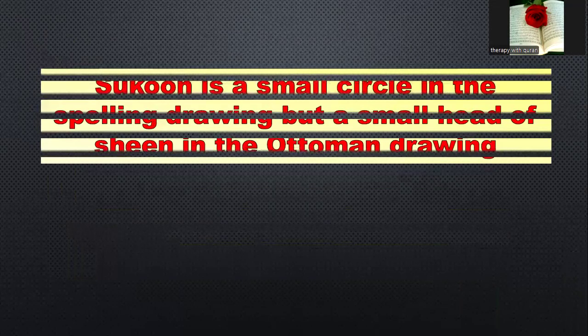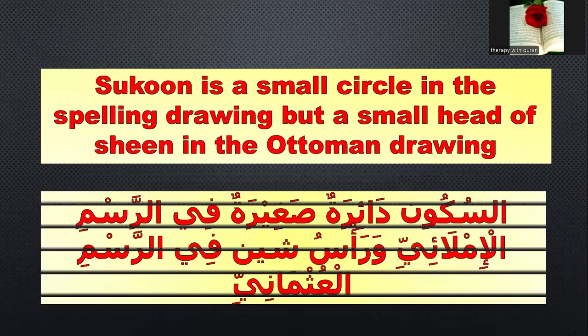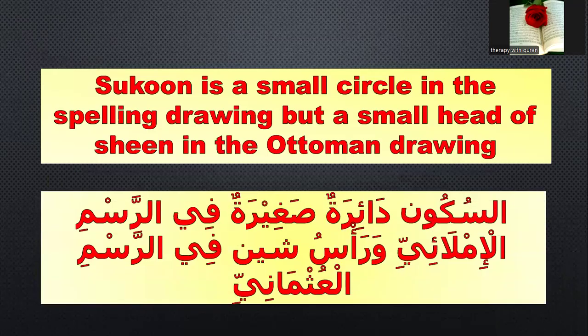Number two: Sukun is a small circle in the spelling drawing, but a small head of sheen in the Osman drawing. Small circle in the spelling drawing — yes. But small head of sheen? No, it's a small head of ha in the Osman drawing. So it's false.